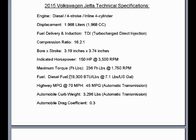We're using diesel fuel with a heat energy content of 19,300 BTU per pound and a fuel density of 7.1 pounds per U.S. gallon. Highway MPG at 70 miles per hour: 45 miles per gallon, curb weight 3,296 pounds, automobile drag coefficient 0.3, and an approximate projected frontal area of 16 square feet.